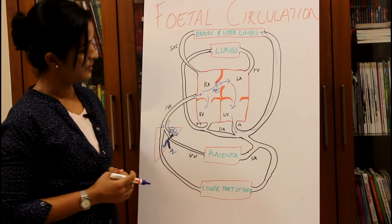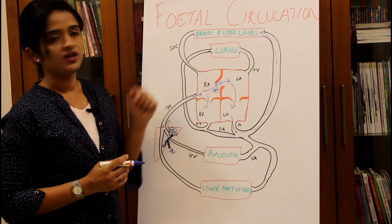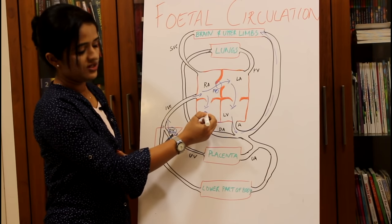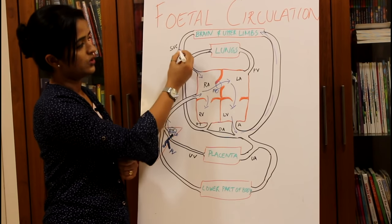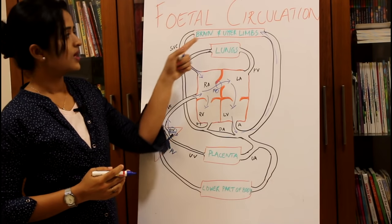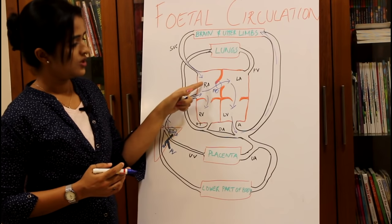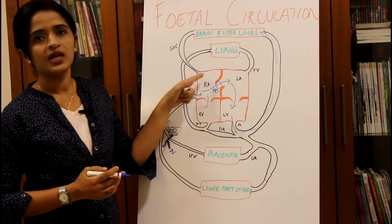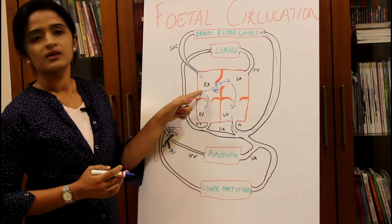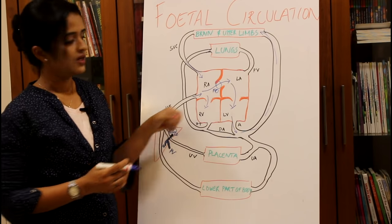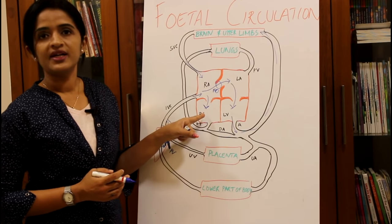The remaining blood in the right atrium reaches the right ventricle along with the impure blood arriving through the superior vena cava. The superior vena cava carries deoxygenated blood from the brain and upper limbs into the right atrium, so there is a mixing of deoxygenated blood from the superior vena cava and oxygenated blood from the inferior vena cava before passing into the right ventricle.